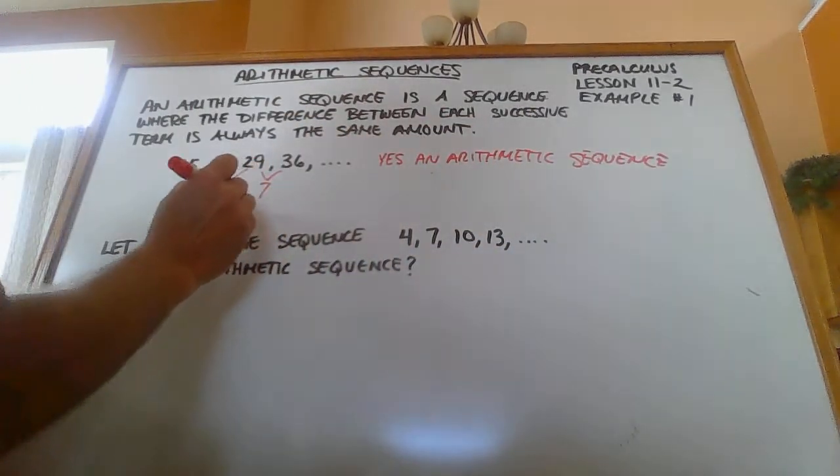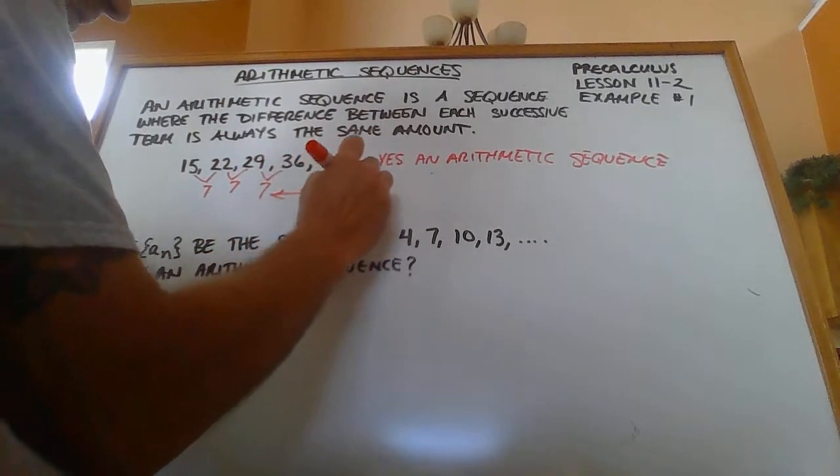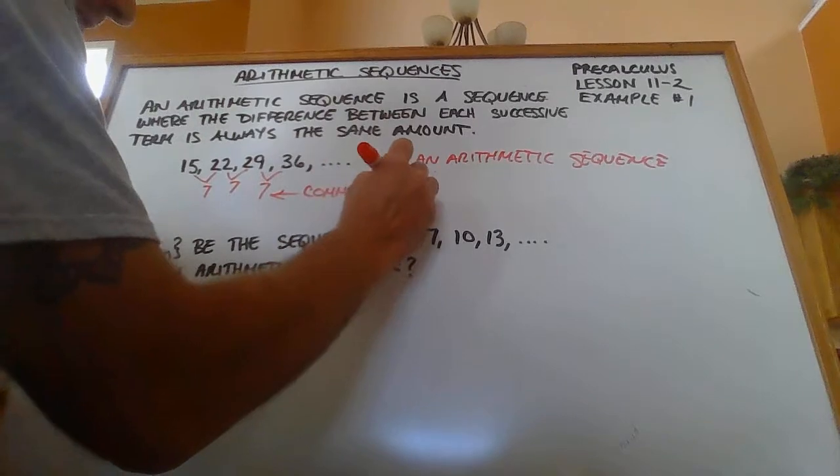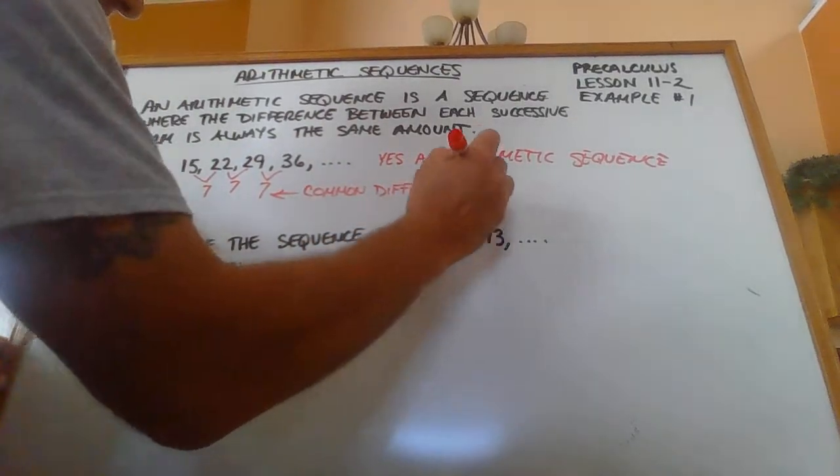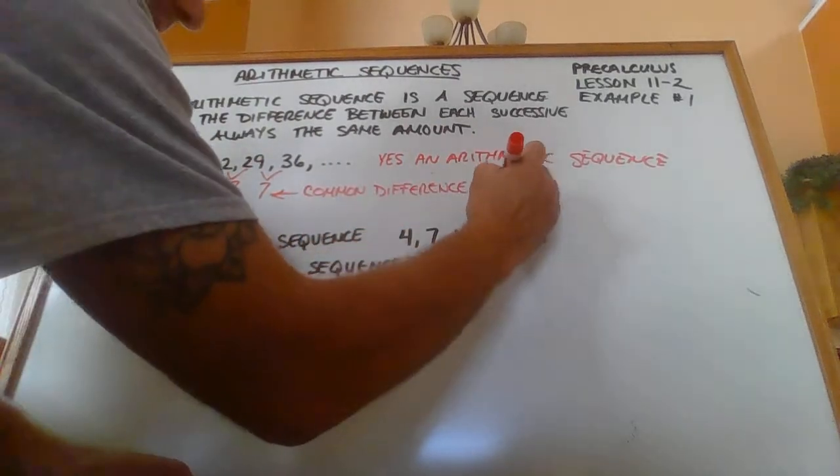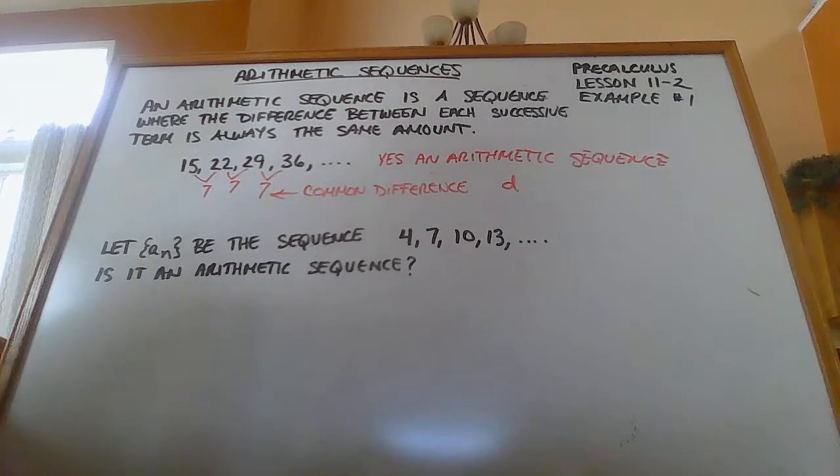And this number right here, 7, is called the common difference. And it's usually referred to with the letter D. Okay, so D would be 7 in this problem.